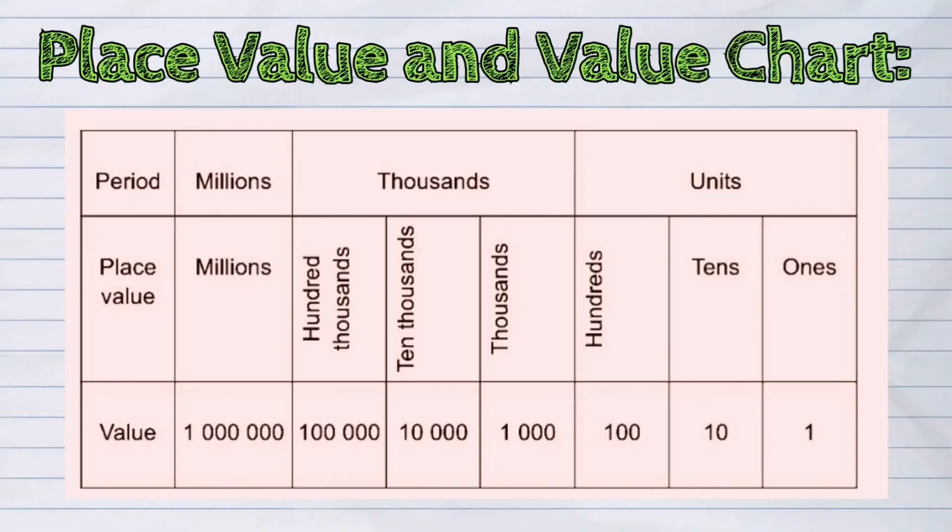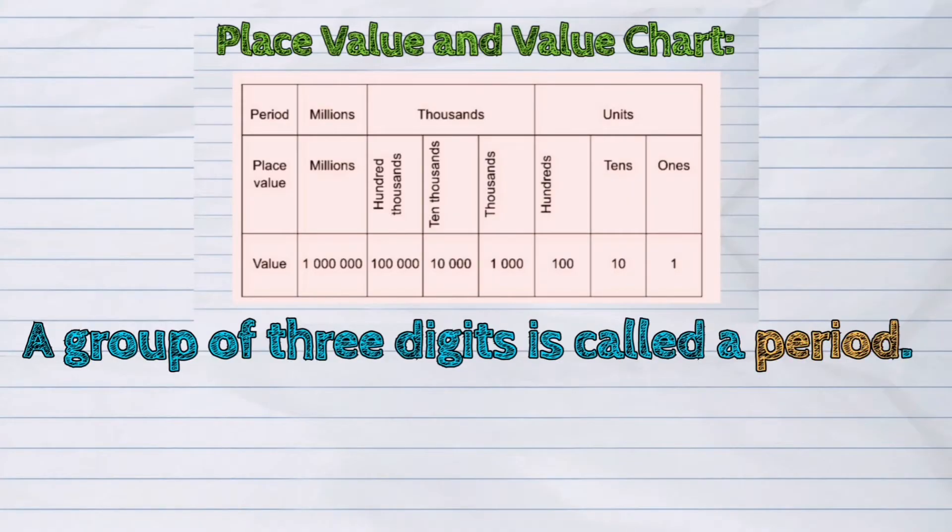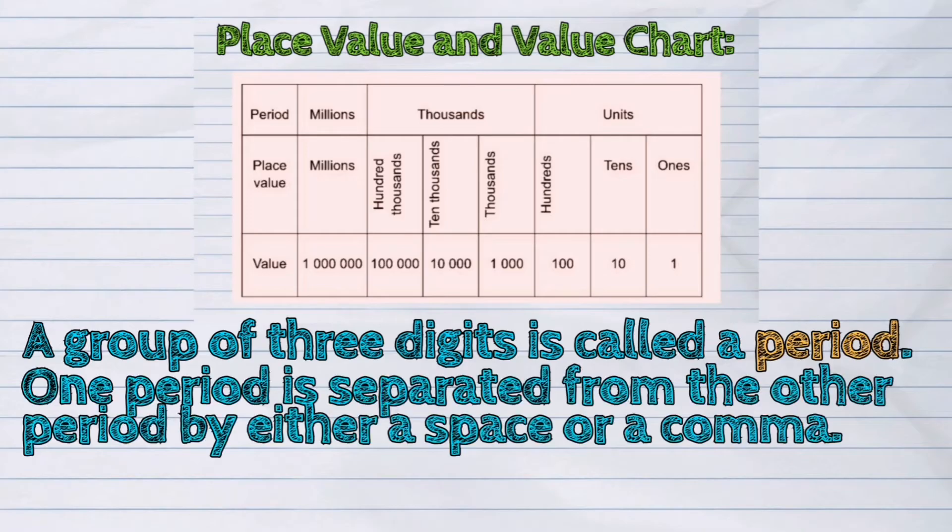Let us study this place value and value chart. In standard form, the number is divided into groups of three digits. A group of three digits is called a period. One period is separated from the other period by either a space or a comma.